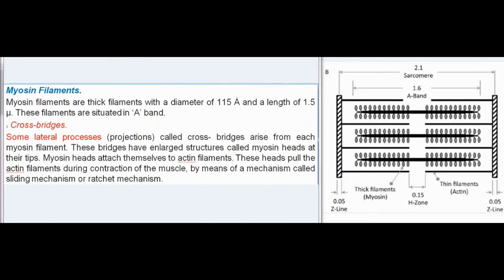Myosin filaments are thick filaments with a diameter of 115 angstroms and a length of 1.5 microns. These filaments are situated in A band. Cross Bridges: Some lateral processes or projections called cross bridges arise from each myosin filament. These bridges have enlarged structures called myosin heads at their tips. Myosin heads attach themselves to actin filaments. These heads pull the actin filaments during contraction of the muscle by means of a mechanism called sliding mechanism or ratchet mechanism.